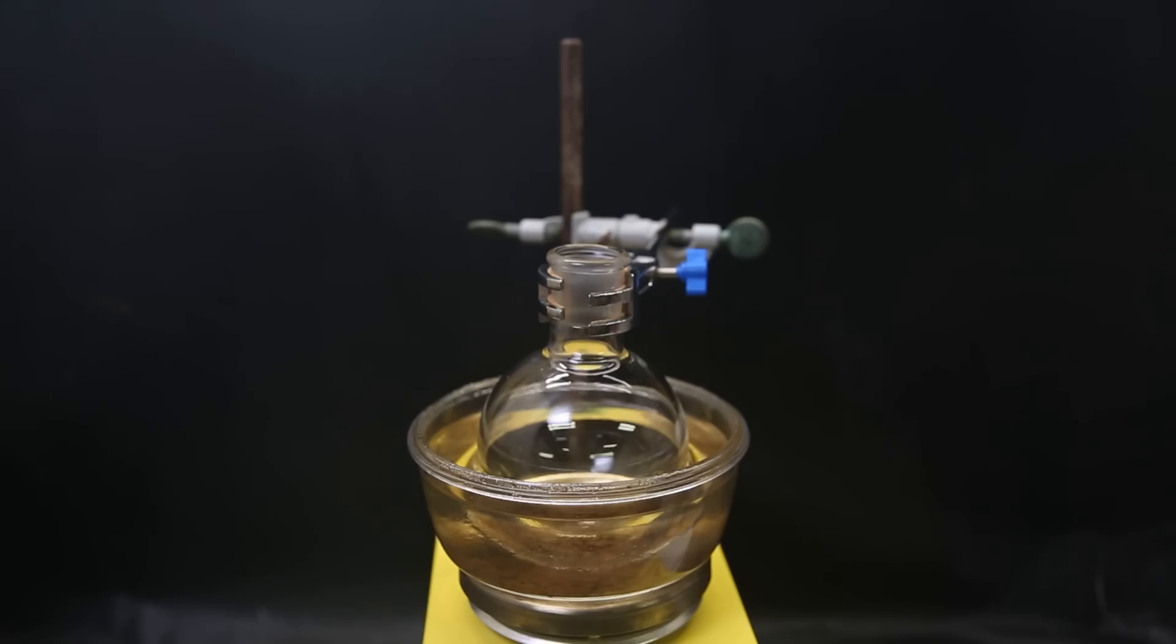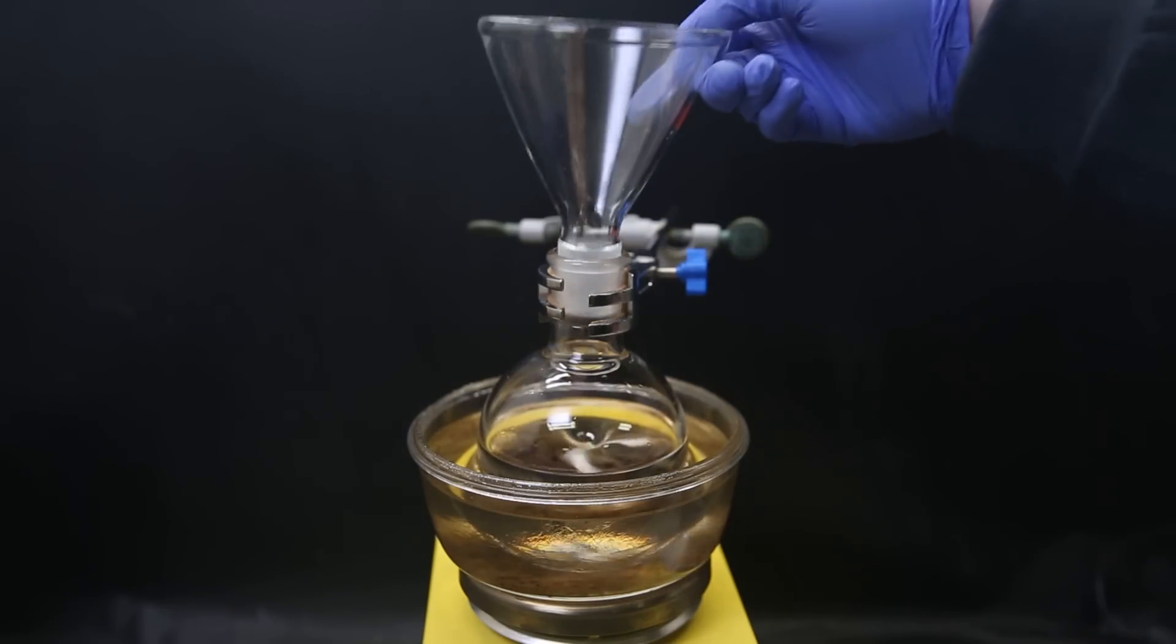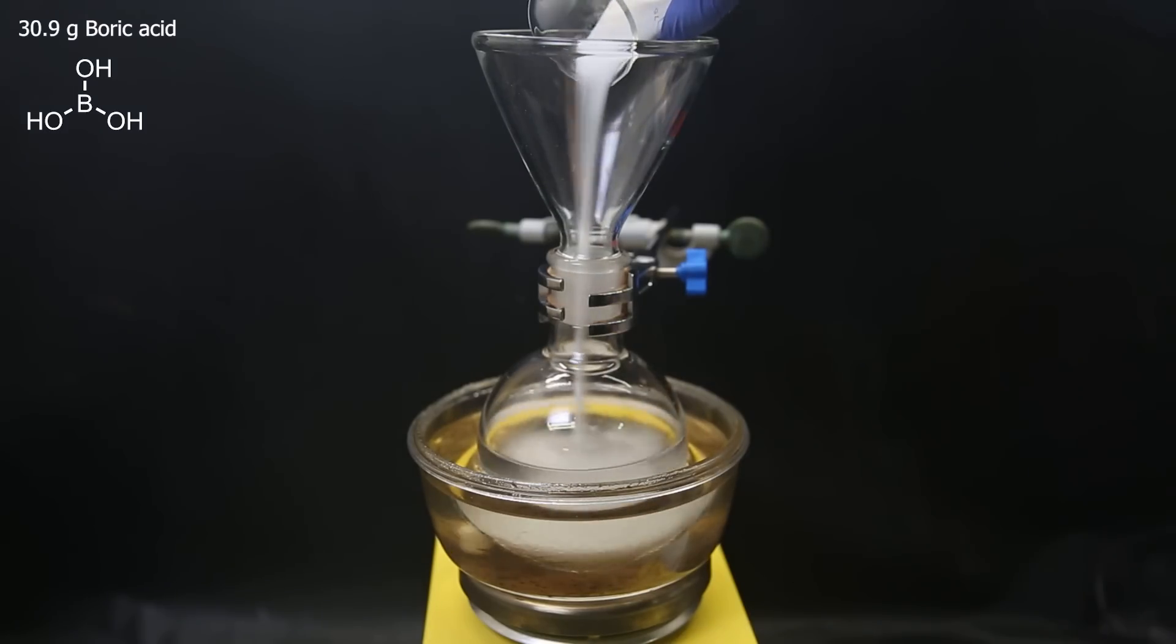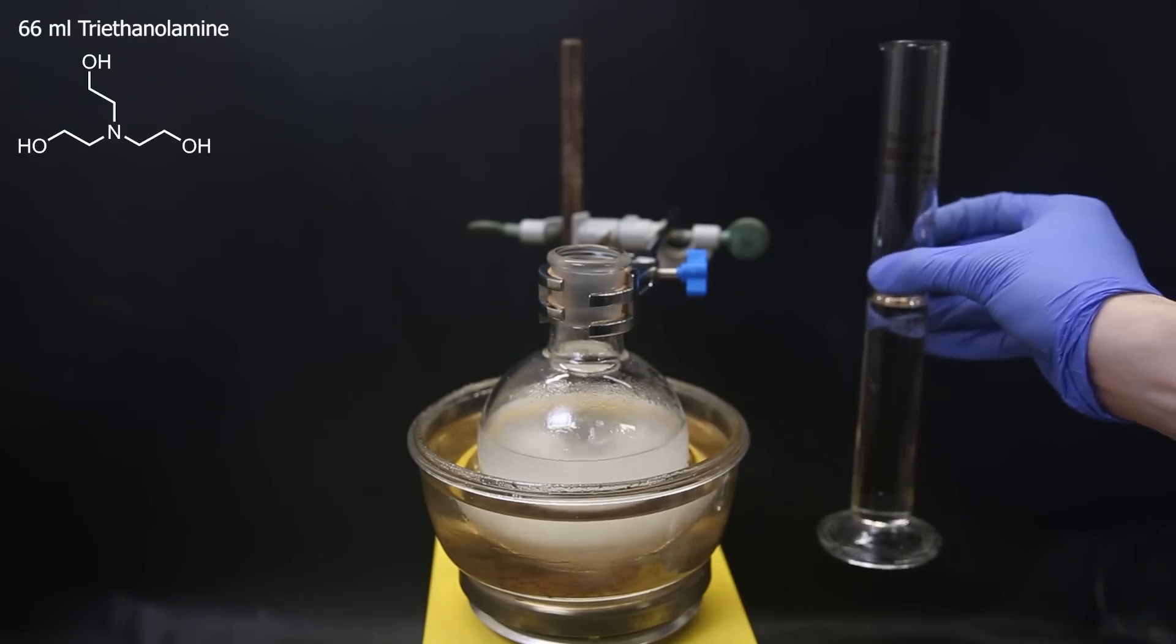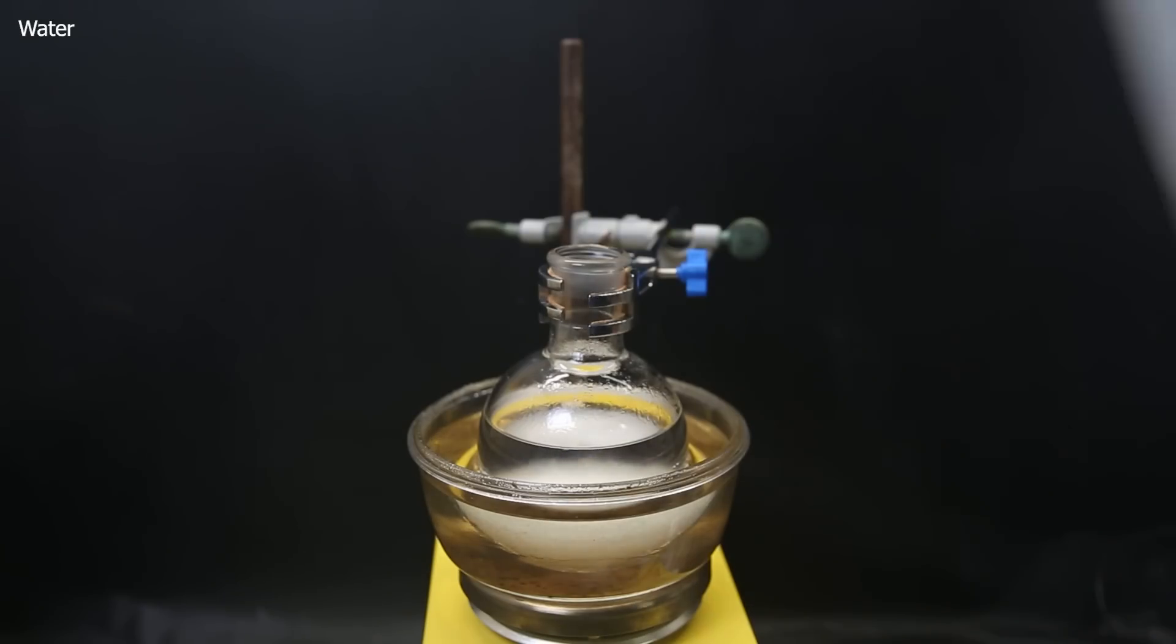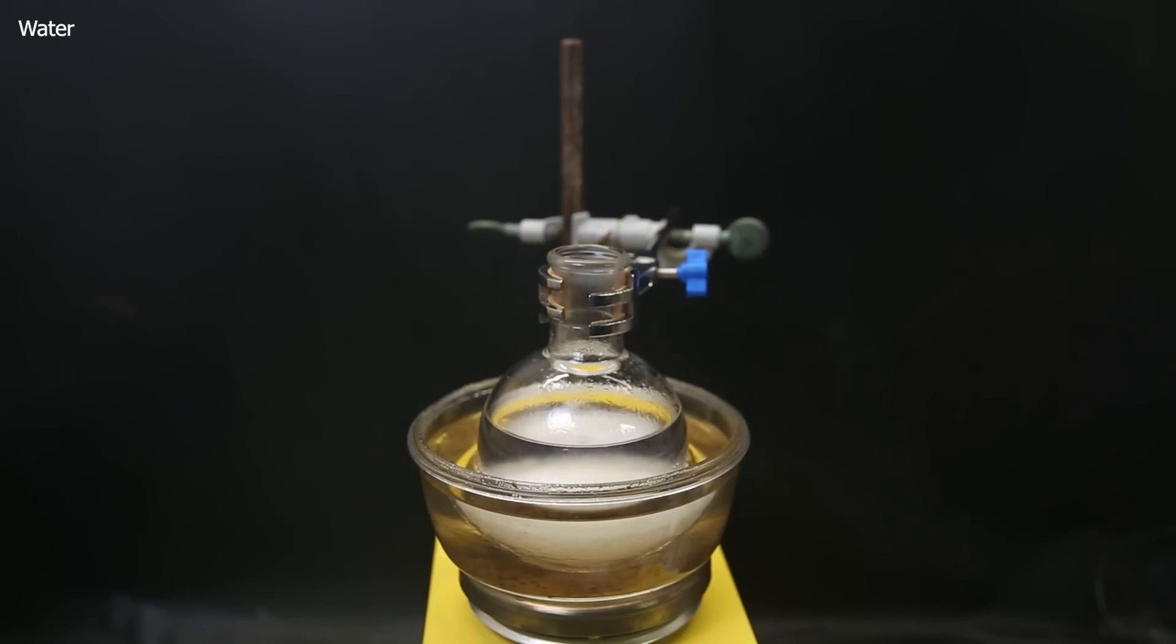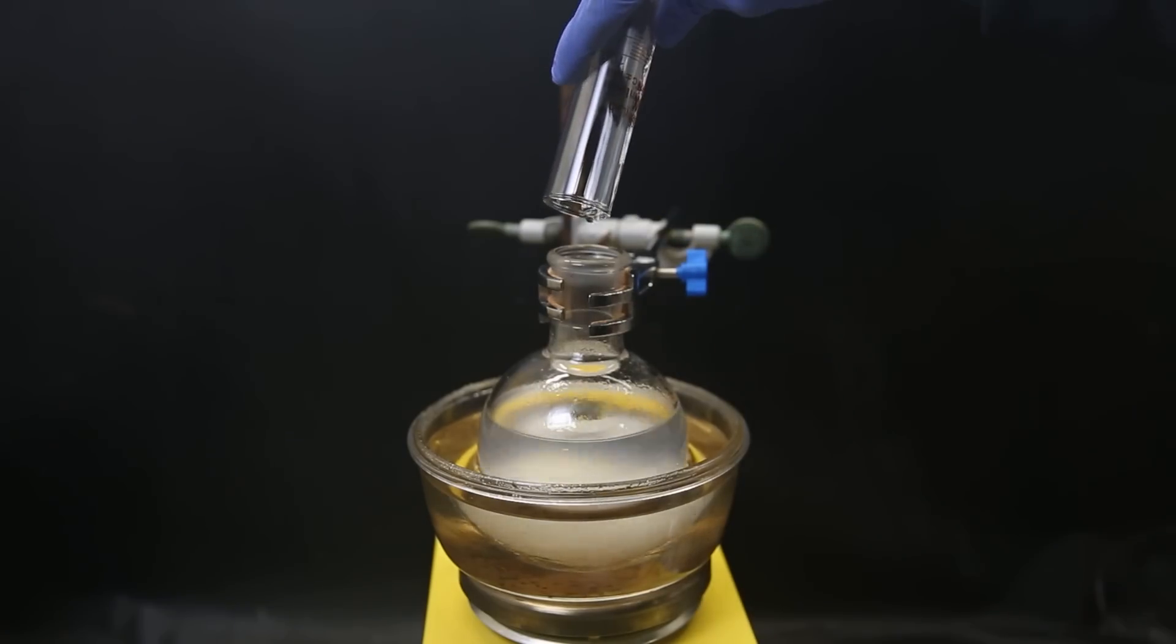So to get started, I set up a flask in a glycerol heating bath and add in 250 ml of toluene as a solvent. I then add in 30.9 grams of boric acid as the first reagent, which can be found easily as ant killer. And then 66 ml of triethanolamine as the second reagent. I add a tiny bit of water to help the reagents mix, since their solubility in toluene is bad. I also wash out the cylinder with some water, since triethanolamine is very viscous.